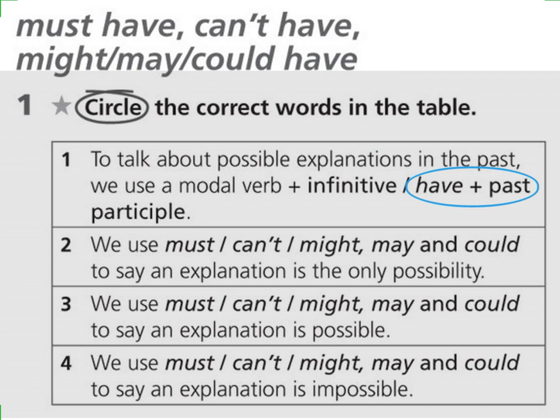And the second item: we use must or can't or might, may, and could plus have plus past participle to say an explanation is the only possibility. There is no other possibility — there is just one possibility that happened in the past. So we are still talking about past modal verbs. The answer is must plus have plus past participle — to say an explanation is the only possibility, there is no other way. So we are deducting, we are concluding about the event that happened in the past, and it is the only possibility.